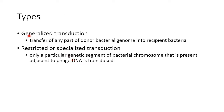There are two types of transduction: generalized transduction and restricted or specialized transduction. In generalized transduction, there is transfer of any part of the donor bacterial genome into recipient bacteria, whereas in restricted transduction, only a particular genetic segment of the bacterial chromosome that is present adjacent to phage DNA is transduced.